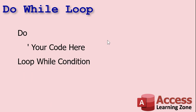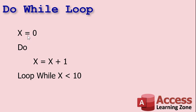One of the nice things about a DO WHILE loop is that you can check the condition either at the beginning or the end of the loop. Placing it at the end forces it to run at least one time. For example: X equals 0, DO, X equals X plus 1 — that happens at least once — then LOOP WHILE X is less than 10. You get the same results, but where you check for the condition determines whether you get at least one iteration.